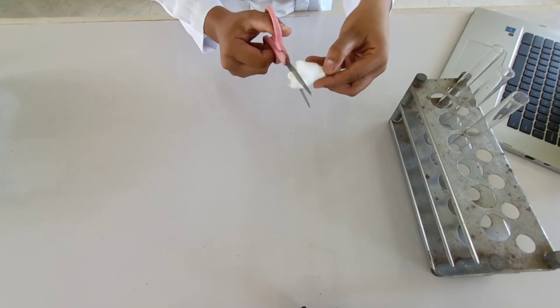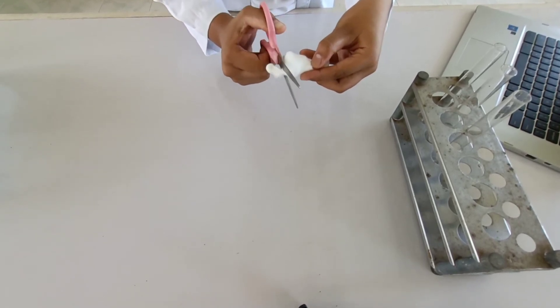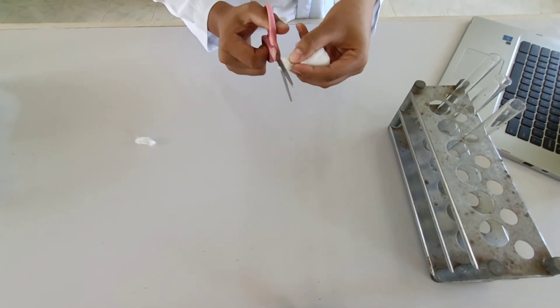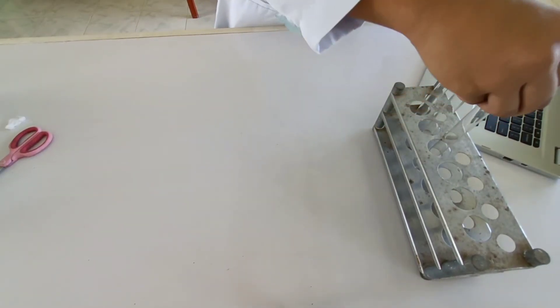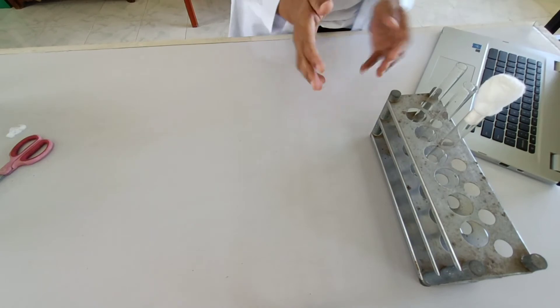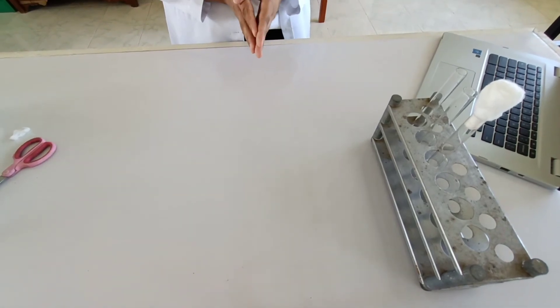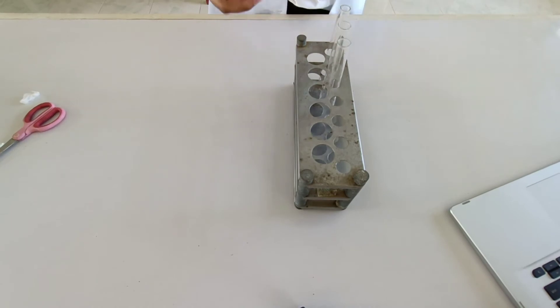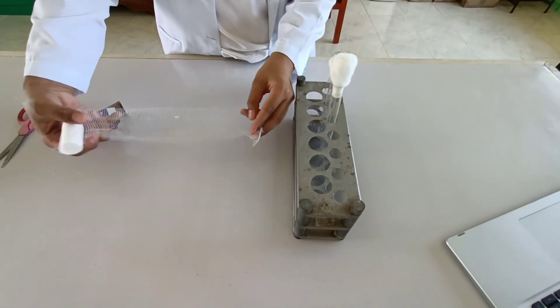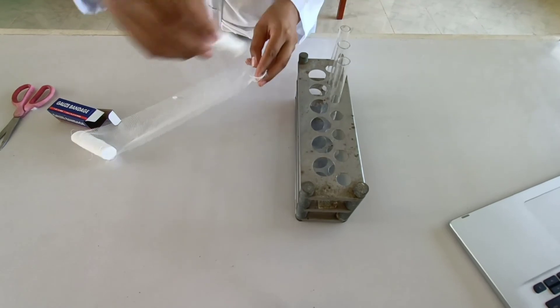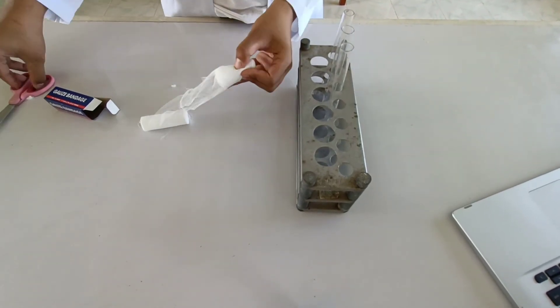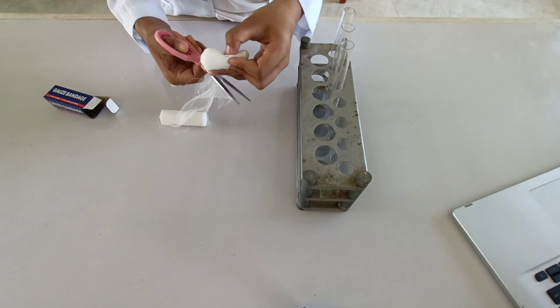Cut the extras on both sides. And this is how it looks like. To prolong its good shape, wrap it in gauze bandage. Then cut it.